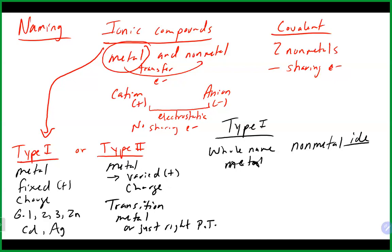For the non-metal in ionic compounds, we drop the last part of the name and put 'ide' at the end. When writing an ionic compound formula, always write the cation first followed by the anion — both in the name and formula. The formula should never have a charge; you balance out the positive and negative so the overall charge equals zero. This allows both ions to achieve a stable noble gas configuration.